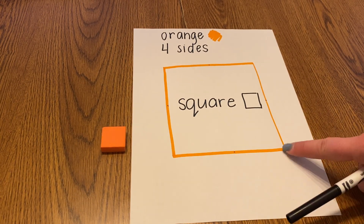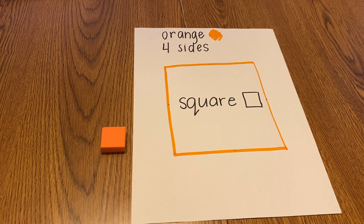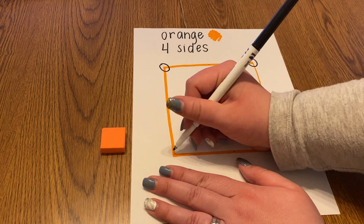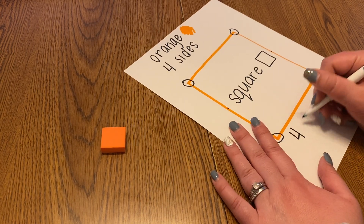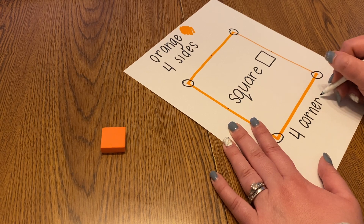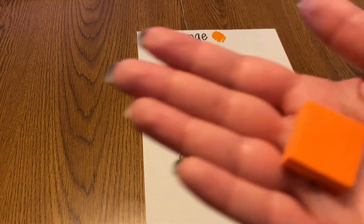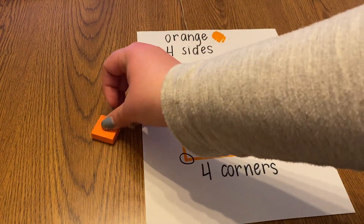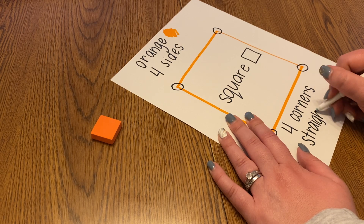Something else that we talked about is these places where the sides meet — where the lines meet. Those are called corners. Let's count and find out how many corners a square has. One, two, three, four. The square has four corners. And the last thing we need to figure out is if the sides of the square are straight or curved. They are straight — it has straight sides.